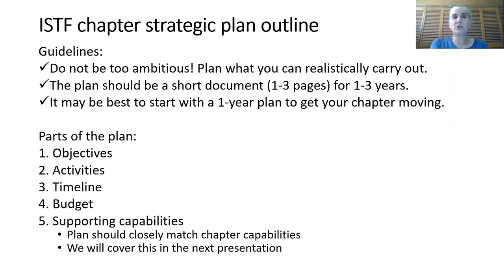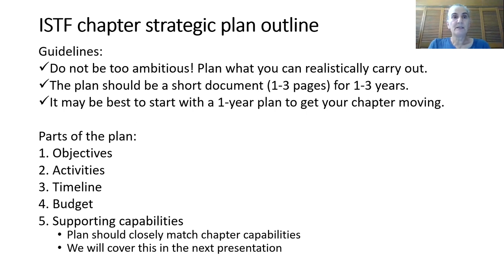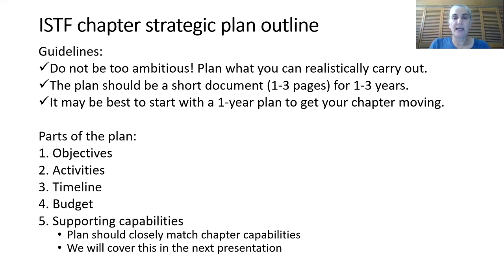Here are the components you would put into a strategic plan. First off, don't be too ambitious — plan out what you can realistically do. The plan should be a short document of one to three pages for one to three years. This is not a full-fledged proposal; it's an overview, an umbrella of what you might do. It may be better to start with a plan for one year to get your chapter moving.